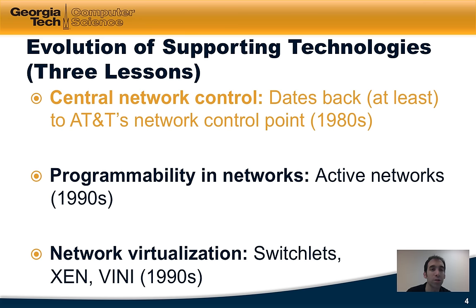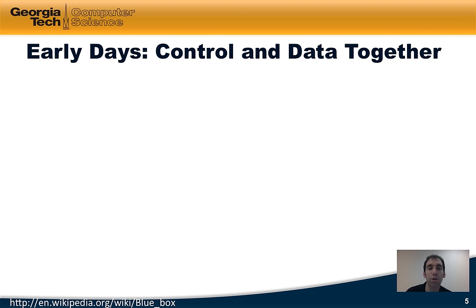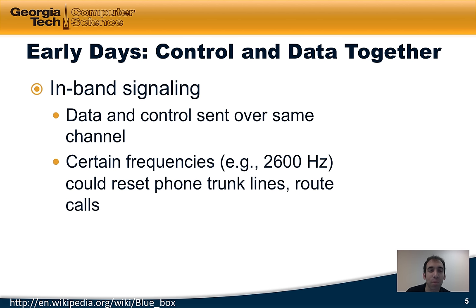It wasn't always the case that networks had central network control. In the early days, control and data planes operated together in the same channel — a paradigm known as in-band signaling, where data and control, or in the case of the phone network, voice and control, were sent over the same channel. Certain frequencies, for example 2600 Hz, could reset phone trunk lines, while pulses on the line could be used to route calls and set up circuits.